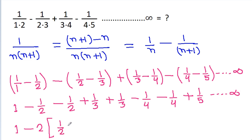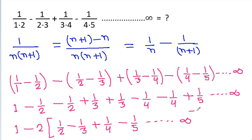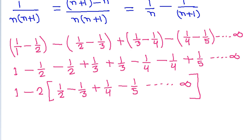So the series becomes 1 minus 2 times (1/2 - 1/3 + 1/4 - 1/5 up to infinity).